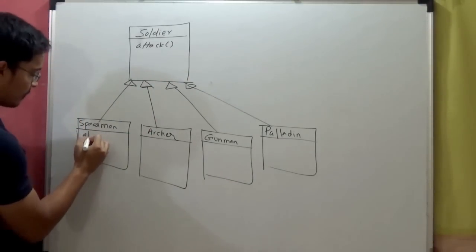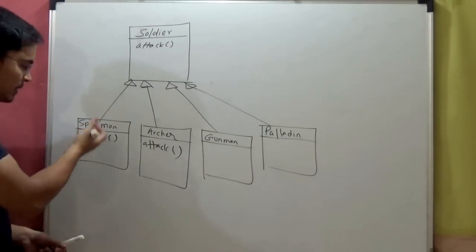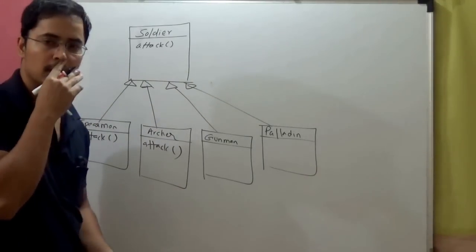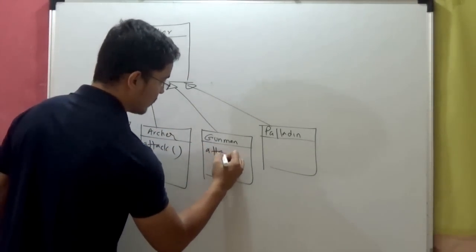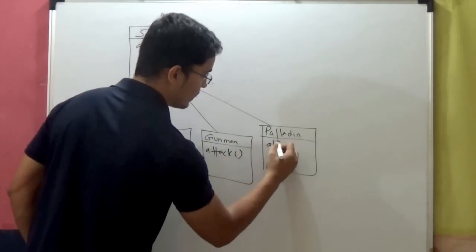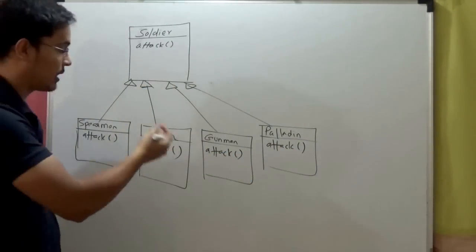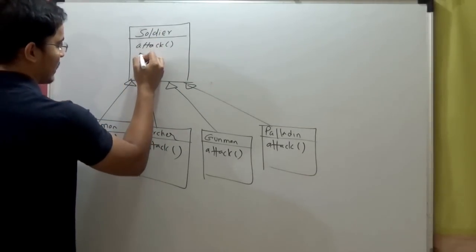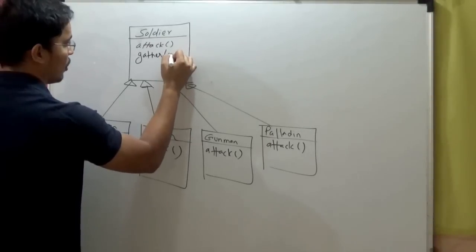They all have their individual way of implementing the attack. Spearman will use spears for attacking, Archers will use bows and arrows, and Gunman will use guns. So that's why this method is implemented differently in different specific type of classes. There is some common method in the soldier abstract class that is gather with some coordinates.